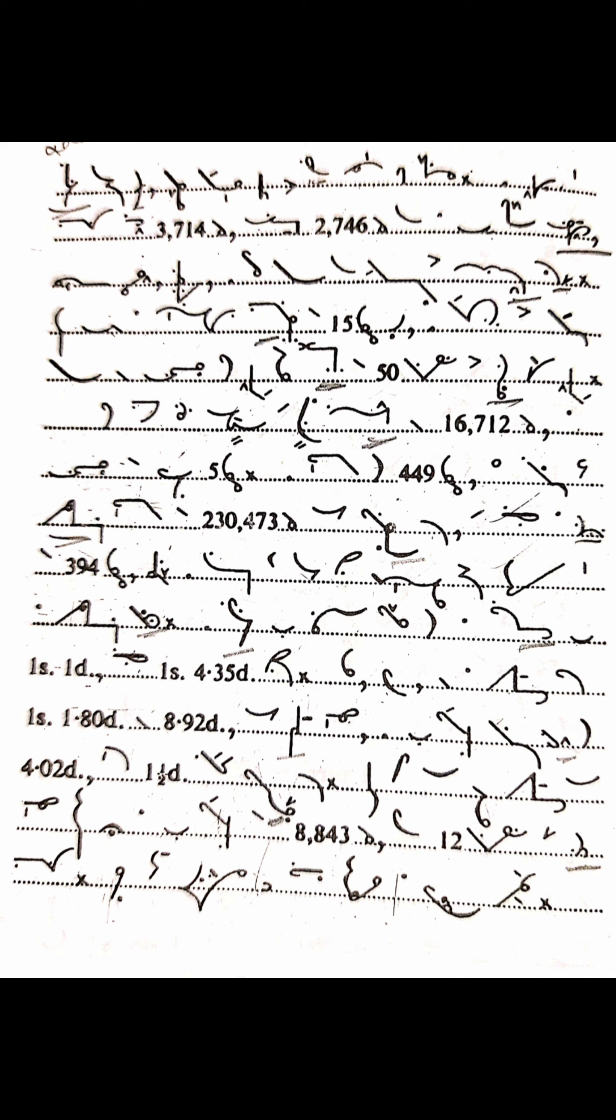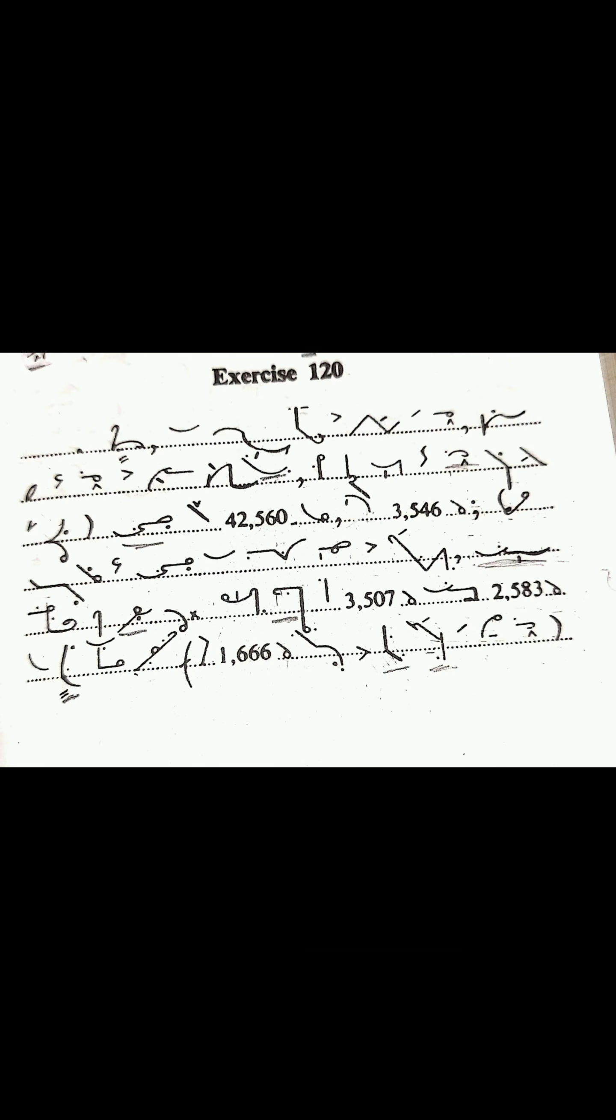Besides bonus due to the staff and some trade items, the outlay on capital account 3,714 pounds included 2,746 pounds for a new drying installation, smokehouse, etc. The balance being for upkeep of the immature area.